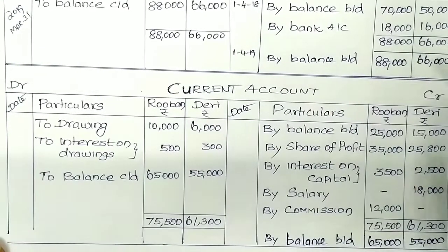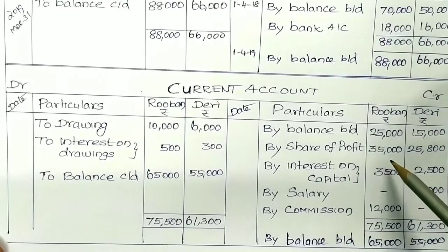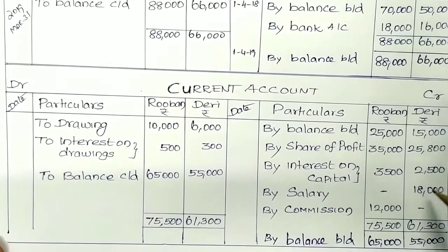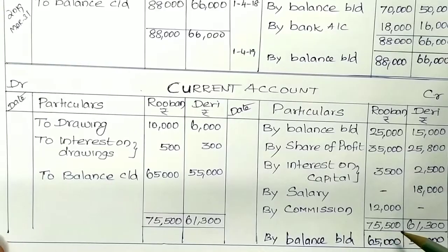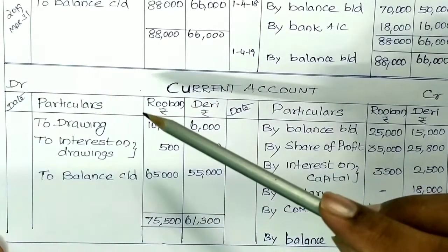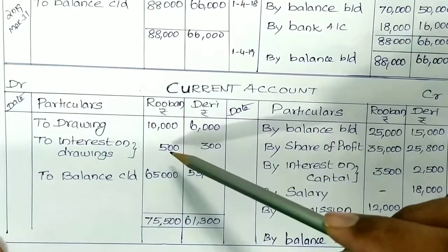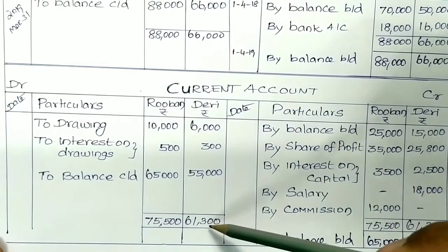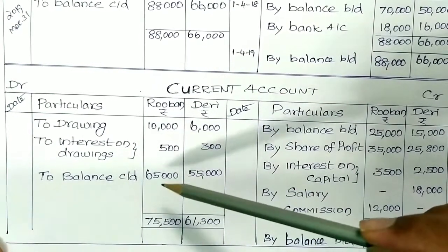We also get figures of 14,000 and 19,000 for the next year. Moving to the current account: opening balances are 25,000 and 15,000. Share of profit is 35,000 and 25,800. Interest on capital is 3,500 and 2,500. Salary is 18,000 and 18,000. Commission is 12,000 and 12,000. Total credit side for Reuben is 75,500 and 61,300. On the debit side, drawings are 10,000 and 36,000, and interest on drawings is 500 and 300. Adding debits of 10,500 to the credit of 75,500 gives a closing balance of 65,000; and 6,300 from 61,300 gives a closing balance of 55,000.